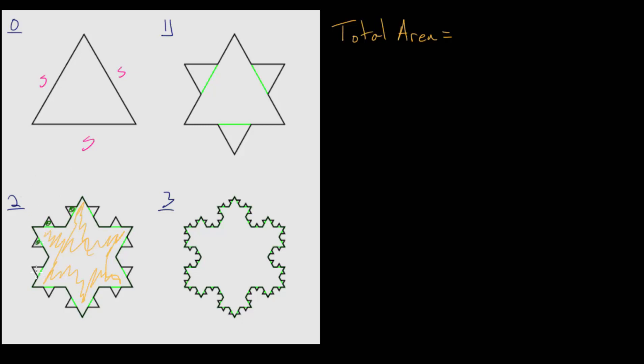These are again going to be equilateral triangles and we have four on each of the three side lengths, which means that we have 12 new triangles here.